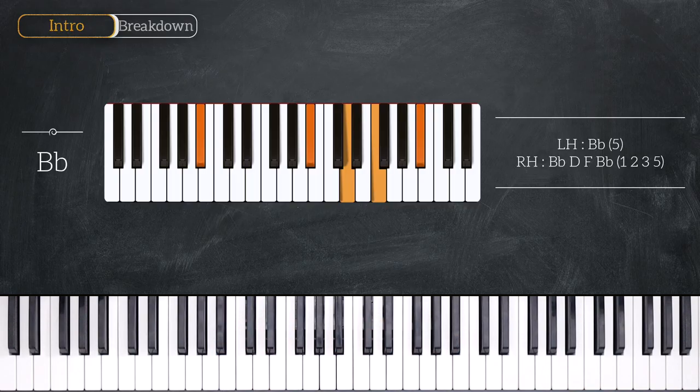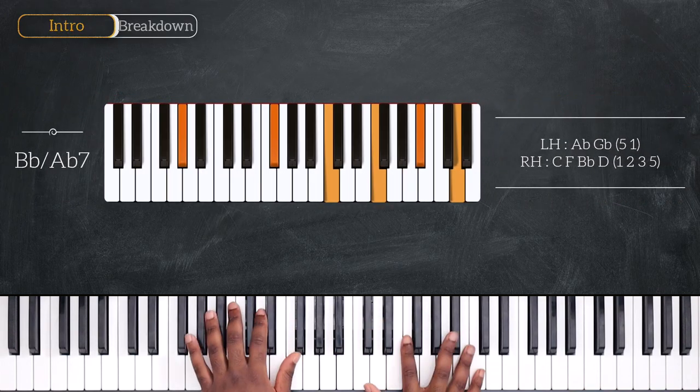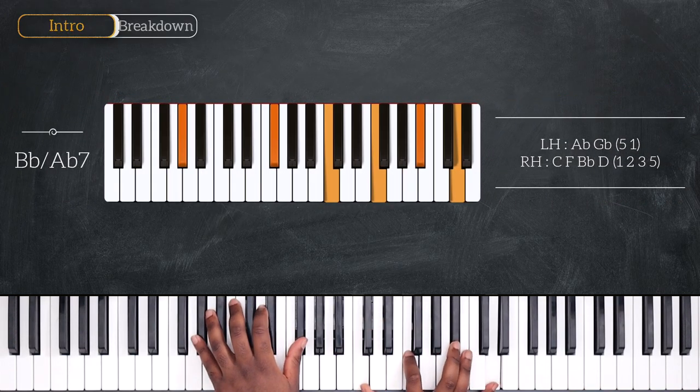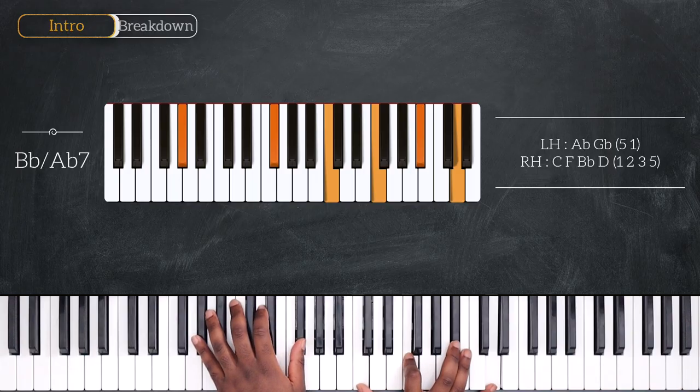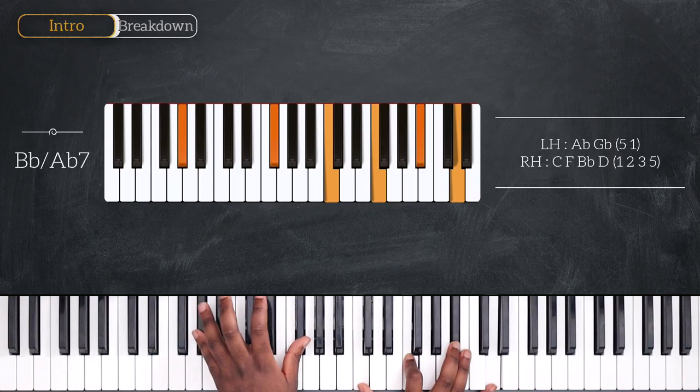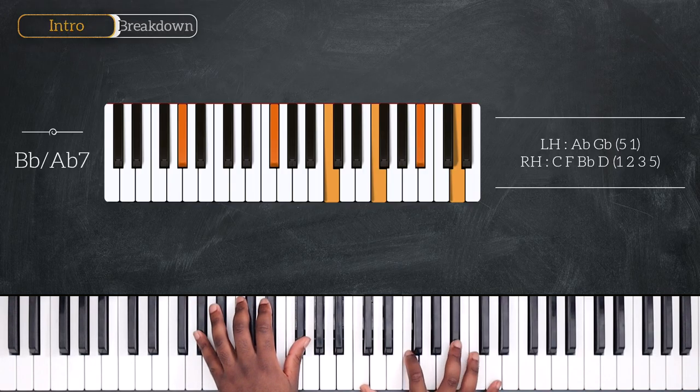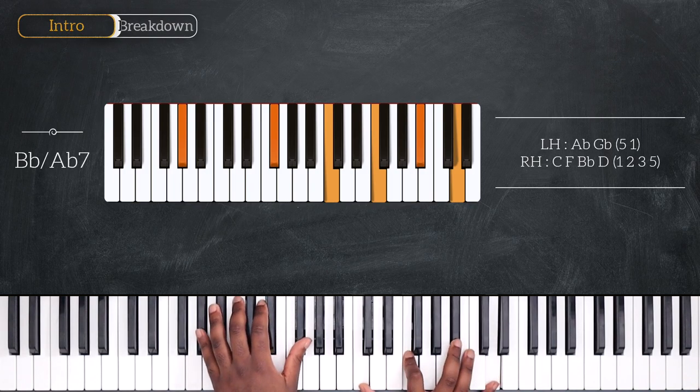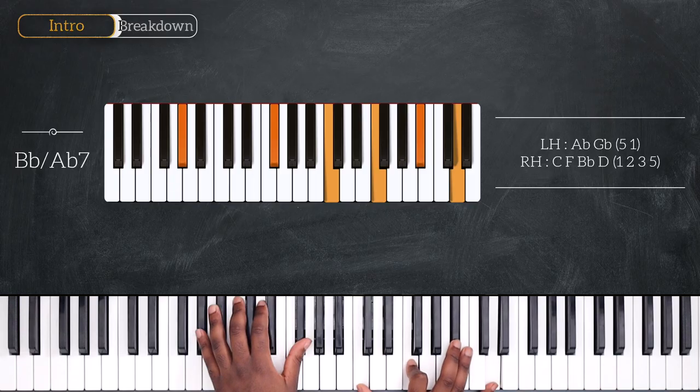Now we're going to go off key by playing this. That's Bb with Ab7 on the bass. I'm playing Ab and Gb on my left with C, F, Bb, and D right hand. If you cannot play that voicing, you can remove the major third here and only play F, Bb, and D.